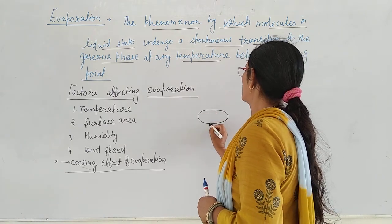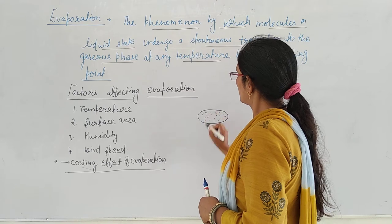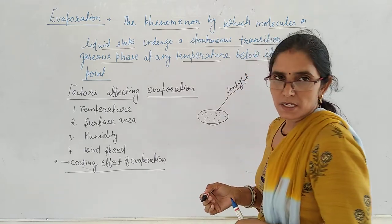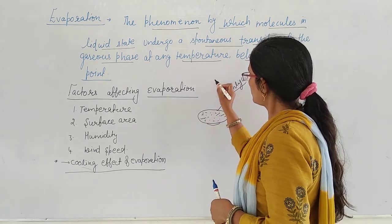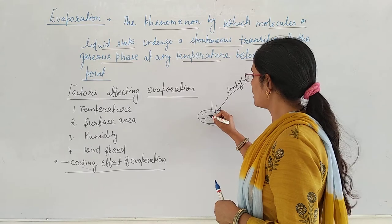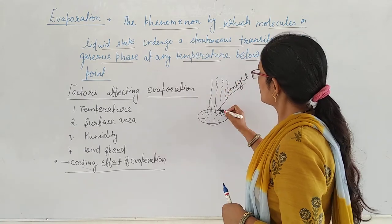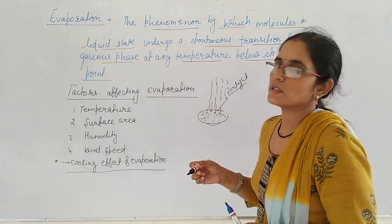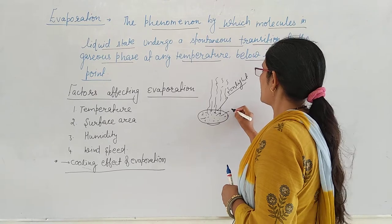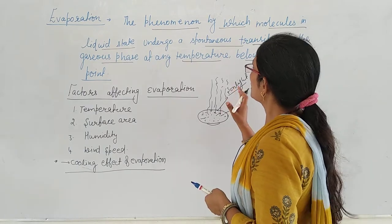For example, you put a plate on the floor and add water to it. You place this plate in sunlight. When you place it in sunlight, the liquid particles absorb the temperature of the surroundings and change into the gaseous phase. After some time, you can see that the amount of liquid in the plate has decreased. This is evaporation.